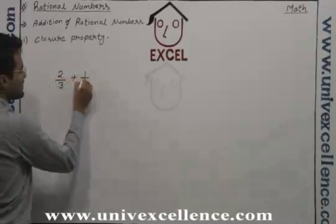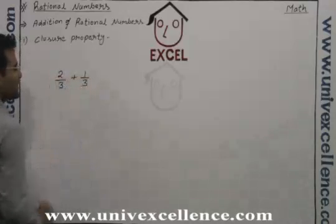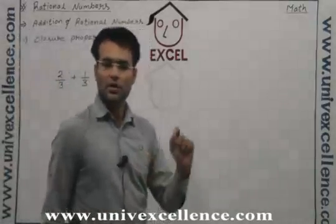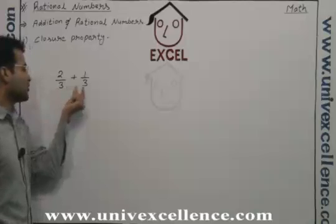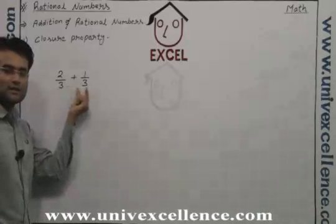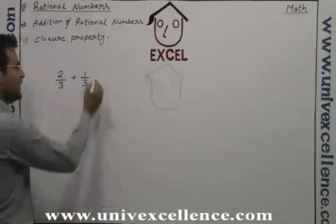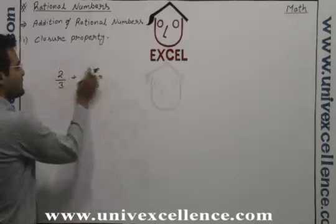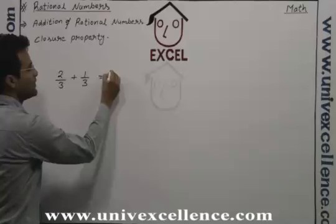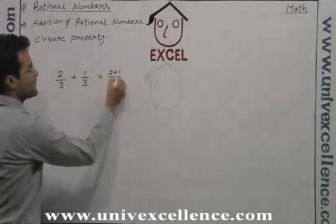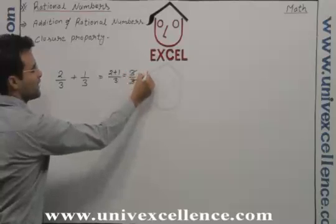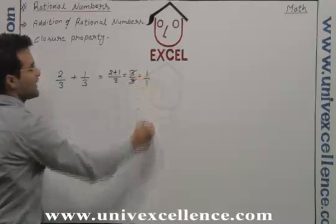Let's take a rational number two upon three and another rational number one upon three. Since the denominators are equal, we just add the numerators: two plus one upon three, which equals three upon three.